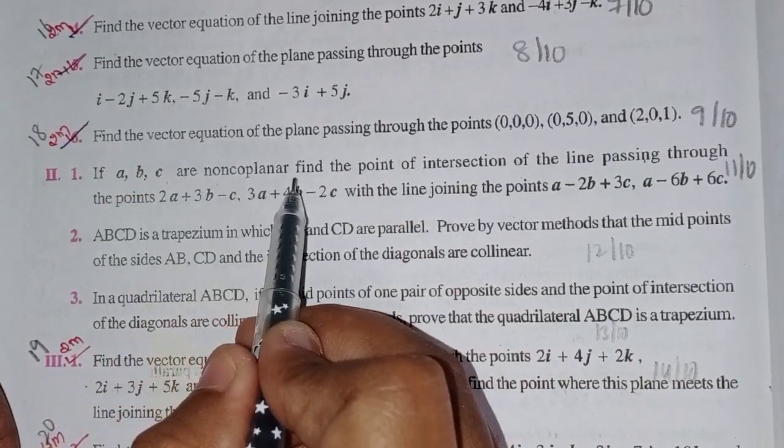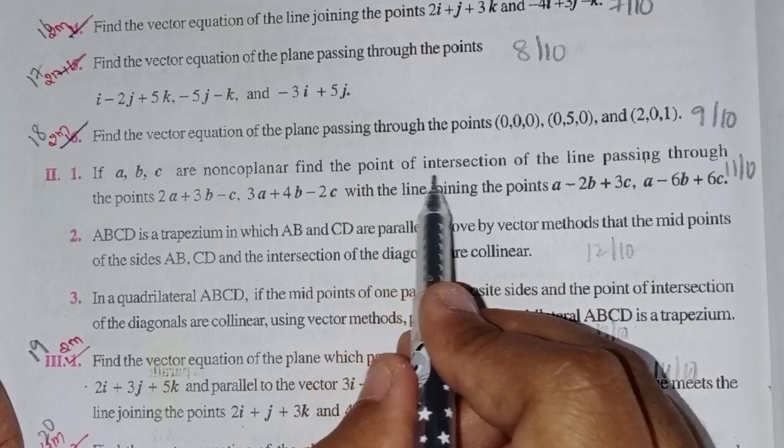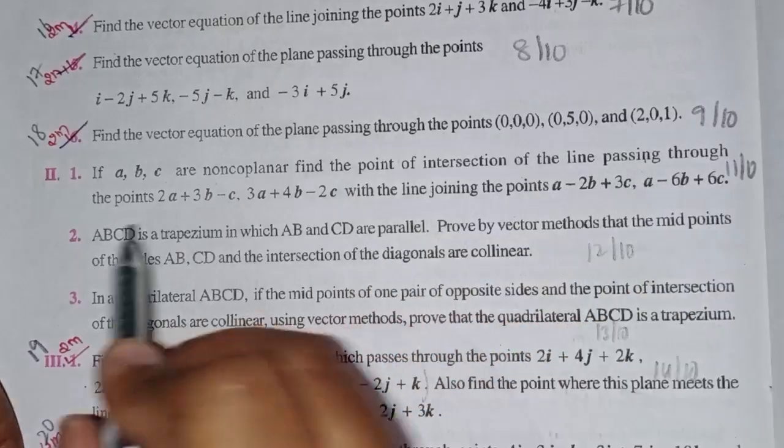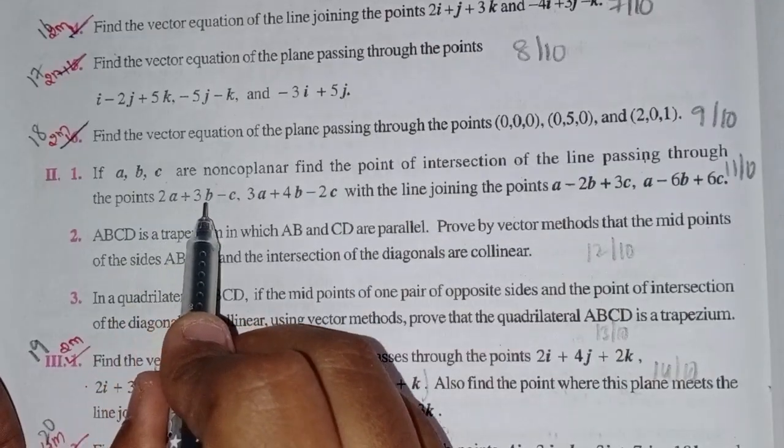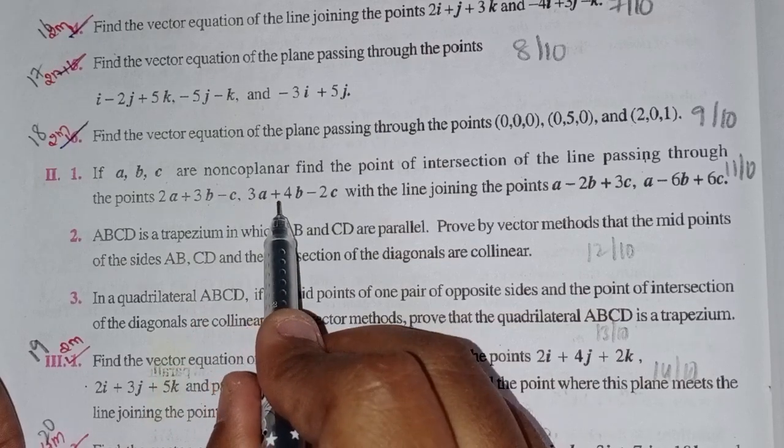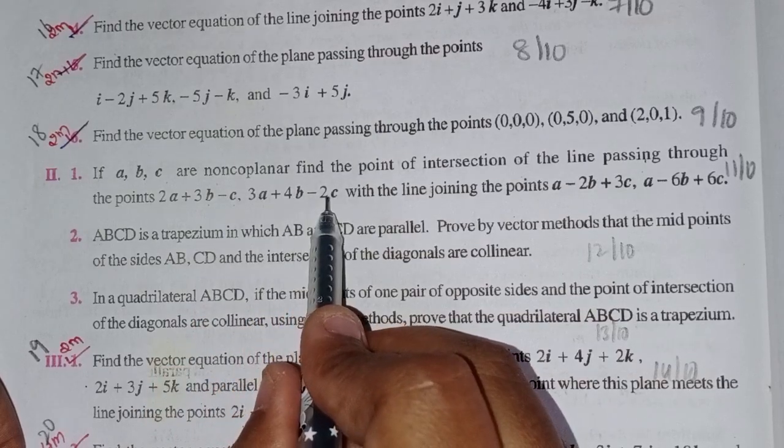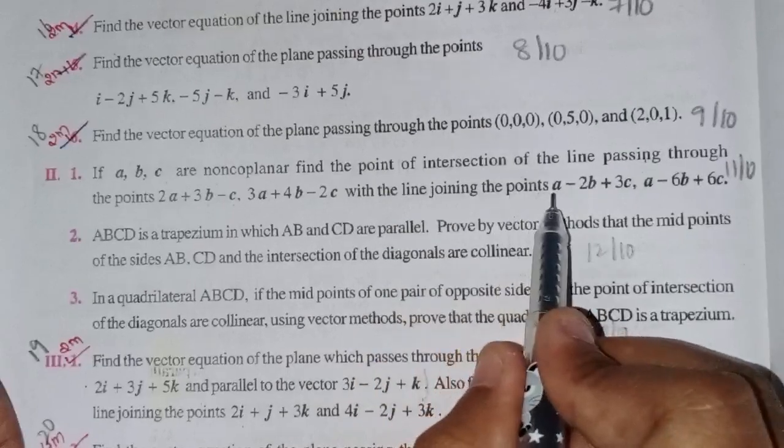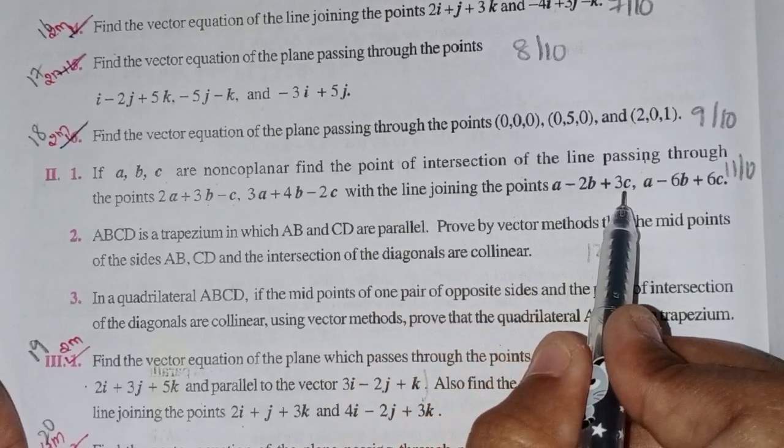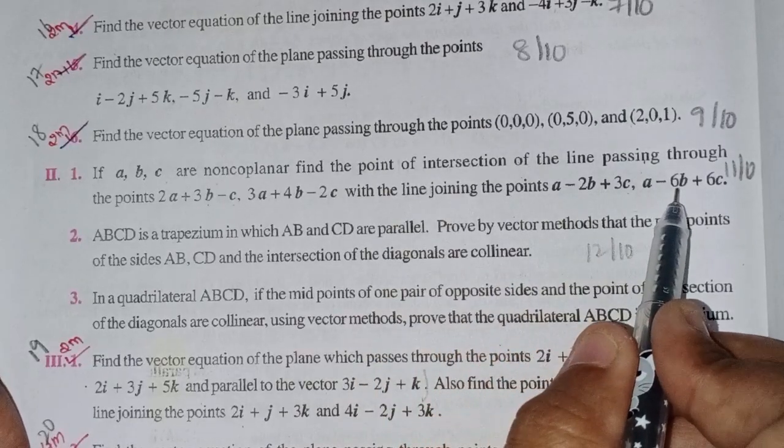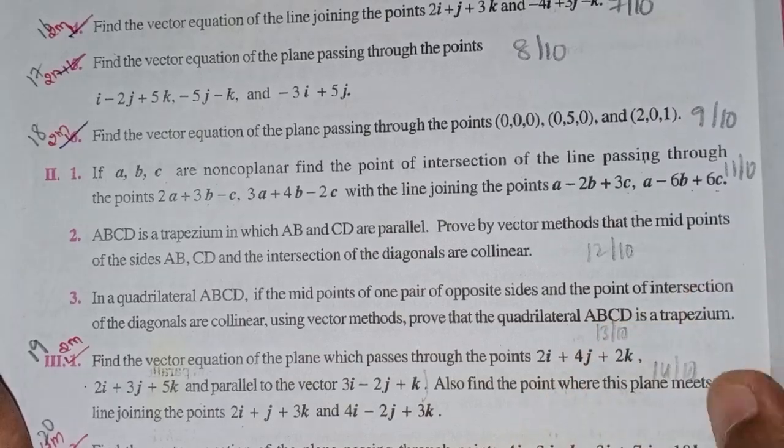If a, b, c are non-coplanar, find the point of intersection of the line passing through the points 2a plus 3b minus c, 3a plus 4b minus 2c, with the line joining the points a minus 2b plus 3c, and a minus 6b plus 6c.